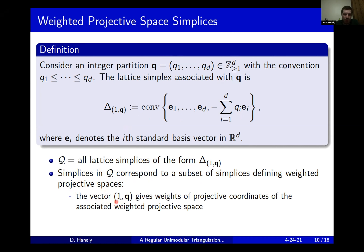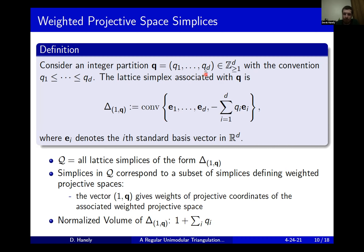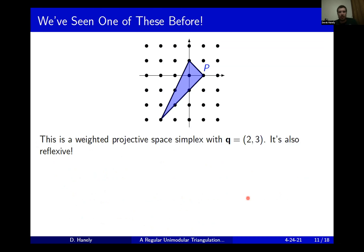The vector (1, q) gives exactly the weights of the projective coordinates of the associated weighted projective space, which is essentially just a toric variety. Furthermore, it's straightforward to compute their volume: just add together the total sum of weights in the q vector, add one more, and that gives you the volume of the polytope. The example we started with was carefully chosen to be a weighted projective space simplex — it was the convex hull of the two standard basis vectors and the point negative two, negative three, i.e., the negative of q = (2, 3).